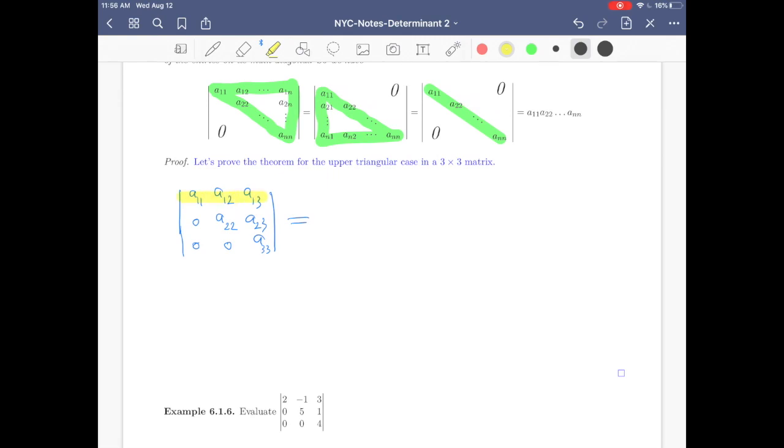Let's do cofactor expansion along the first column. So what do we get? You see this is plus, minus, plus. That doesn't matter, you will see why. Then you get A11 times determinant of, remove the first row, the first column. What do we get? You get A22, A23, and then 0, and then A33.